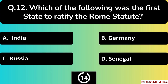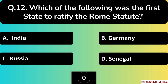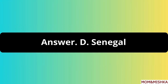Which of the following was the first state to ratify the Rome Statute? The correct answer is option D — Senegal.